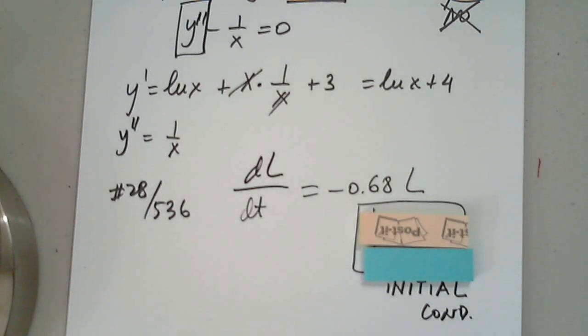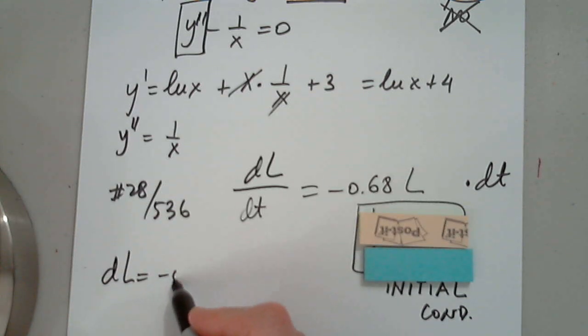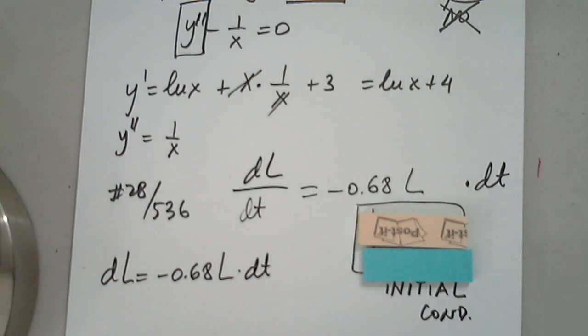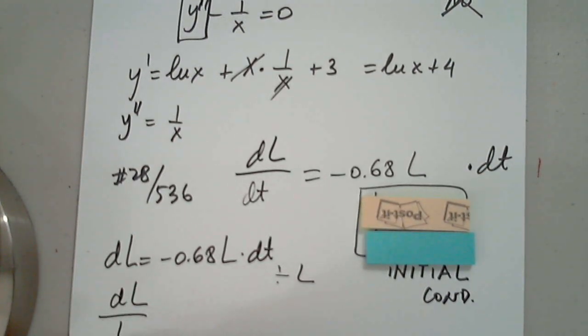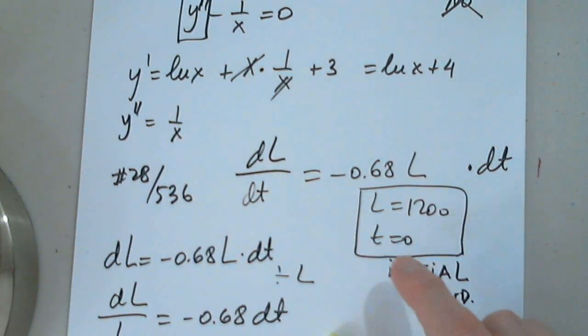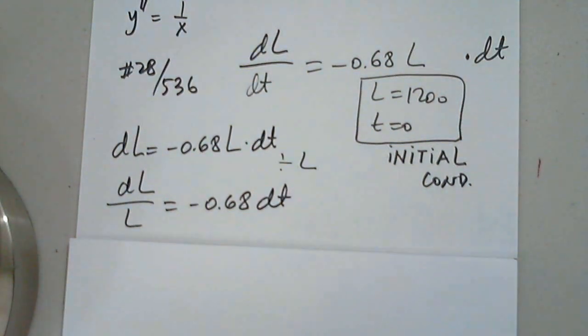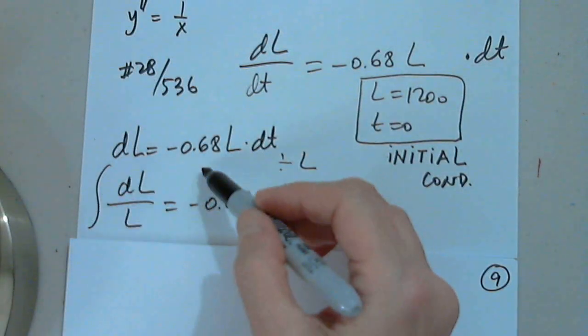We have to multiply by dt. Very good. That's exactly what we're going to do. So dL equals negative 0.68L times dt. Awesome. Next step. Divide by L. Yes, awesome. Divide both sides by L, so we have dL over L equals negative 0.68 dt. Are the two variables separated? Is L alone on one side? Is t alone on the other? And the answer is yes. What is the next step after we separate the variables? Integrate both sides. Yes, we are integrating both sides.